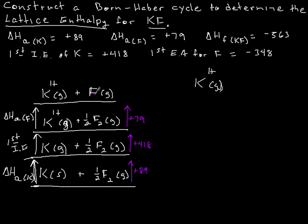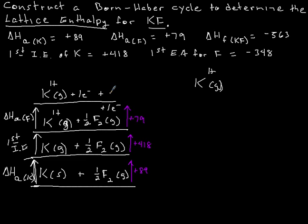Now we need to take the fluorine and give it a negative charge. I should have written '+1 electron' on the previous step because when potassium was ionized, that electron doesn't just go into nowhere — it's here. So we have the potassium 1+ ion in the gaseous phase, plus the electron that it gave up, plus the gaseous fluorine atom. That electron should be tracked on this step as well.